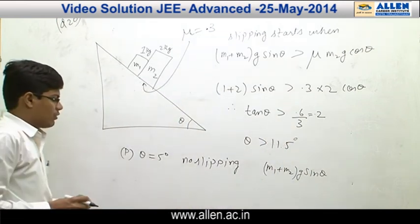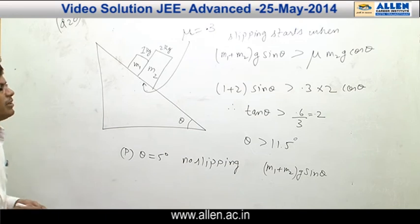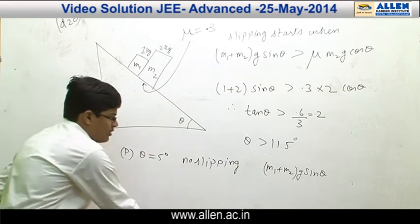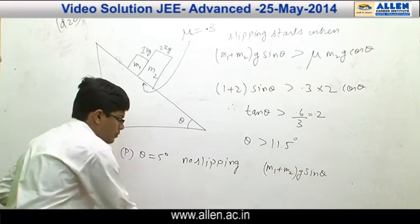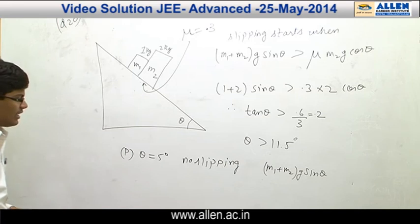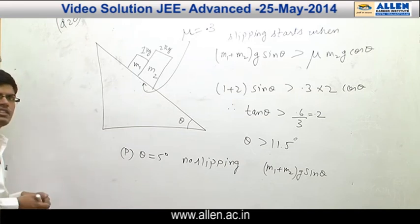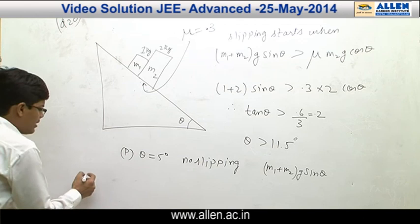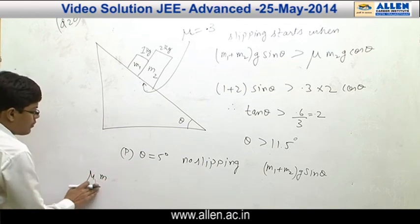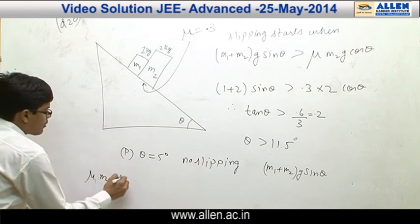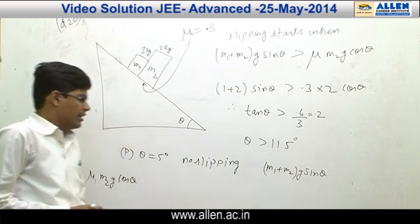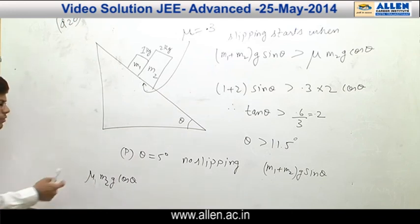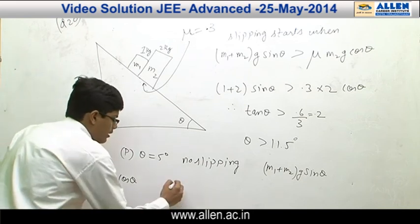Similarly, when theta = 10°, friction will just be equal to (M1 + M2)g sin θ. So that gives us P → 2 and Q → 2. When theta = 15° or 20°, the system will slip and kinetic friction will act, which equals μ M2 g cos θ. So the answer would be D.